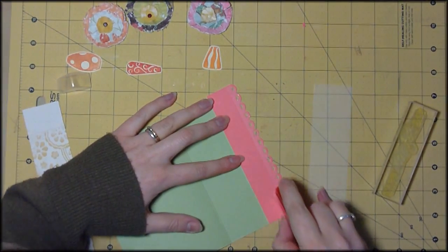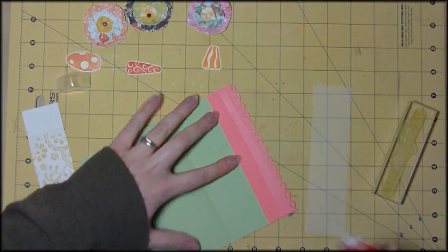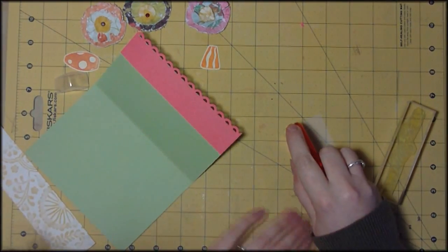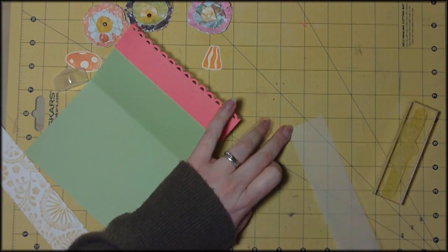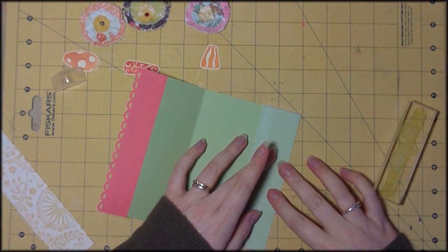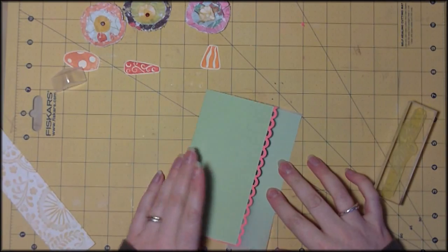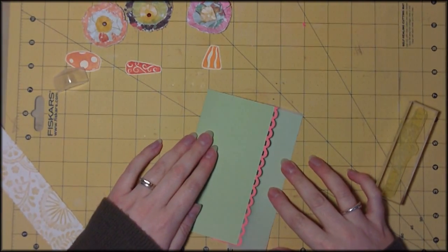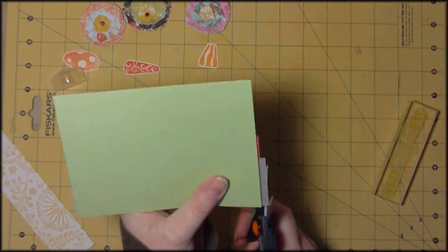And then I'm going to run another line of tape runner down there and adhere this bit of vellum. Now I'm not worried about using tape runner adhesive at all because I'm going to cover up that join in the end with another piece of the green cardstock on the inside so it doesn't bother me.